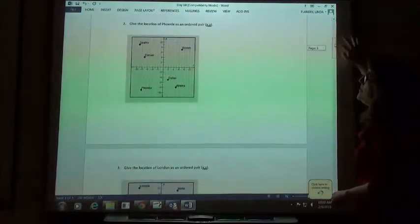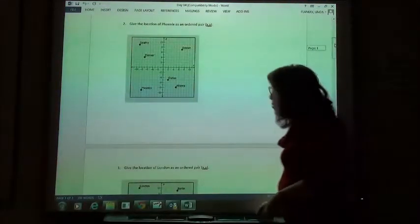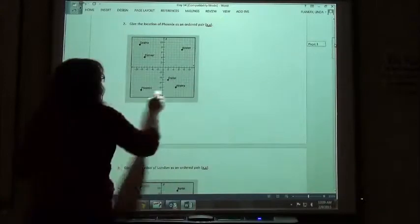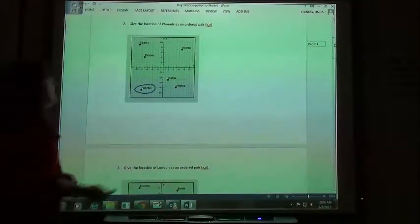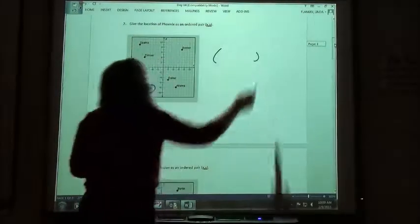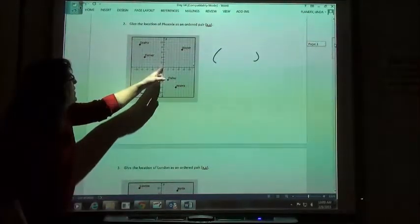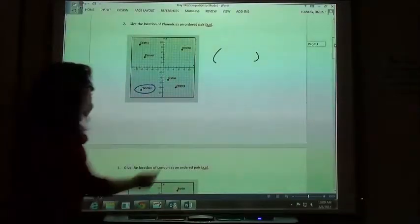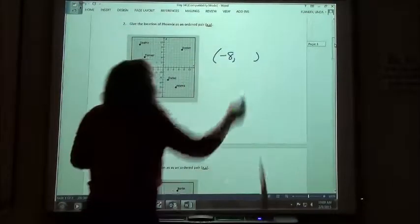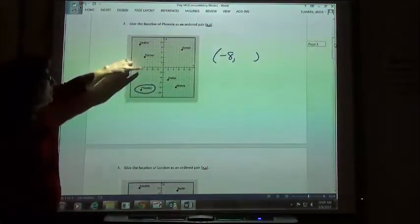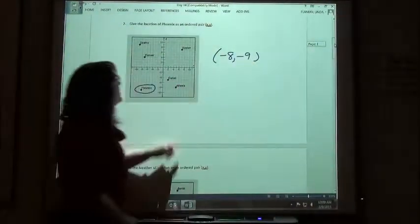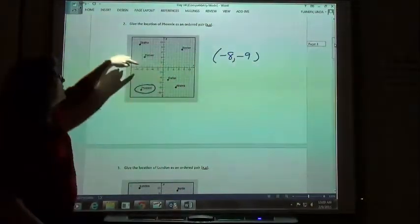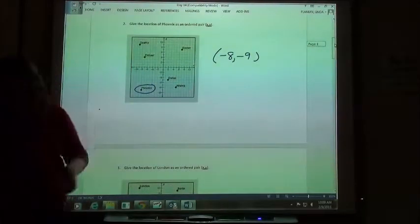My second one says give the location of Phoenix as an ordered pair. Phoenix is over here in quadrant 3. For my x-direction, I have to go negative 8. If I start at 0, I go back to negative 8, I'm right above Phoenix. Then in my y-direction, I'm going to go negative 9. If I started at 0, 0 and went to the left 8 and down 9, I end up in Phoenix.